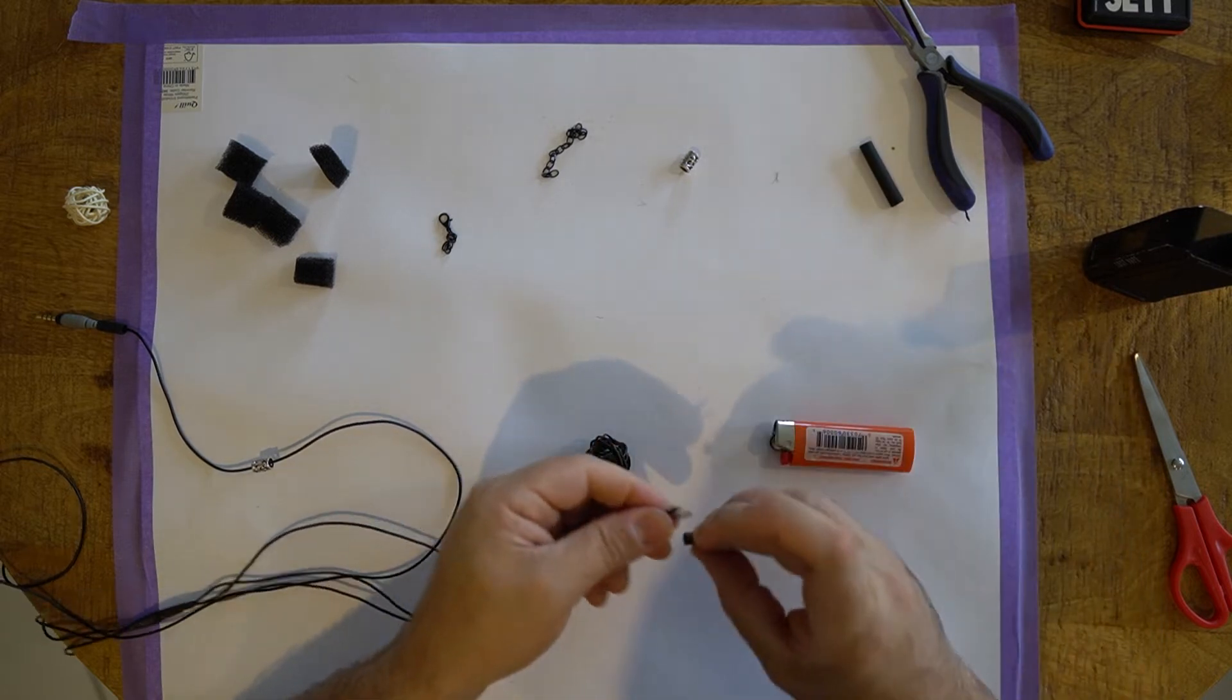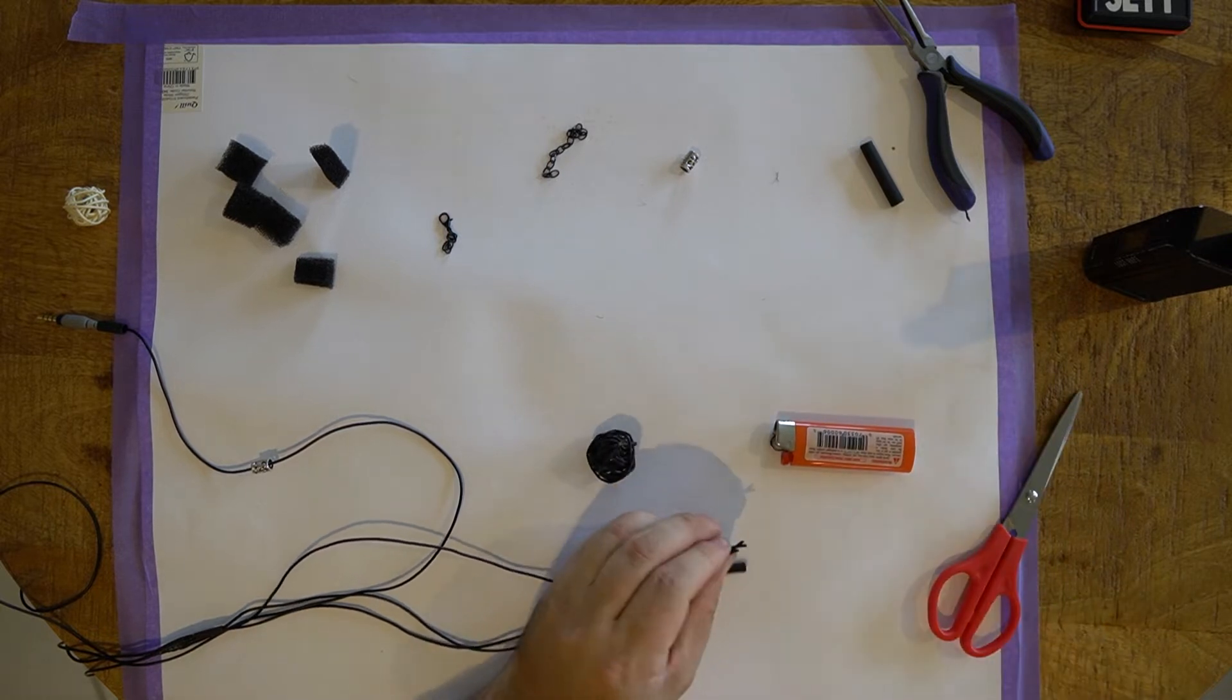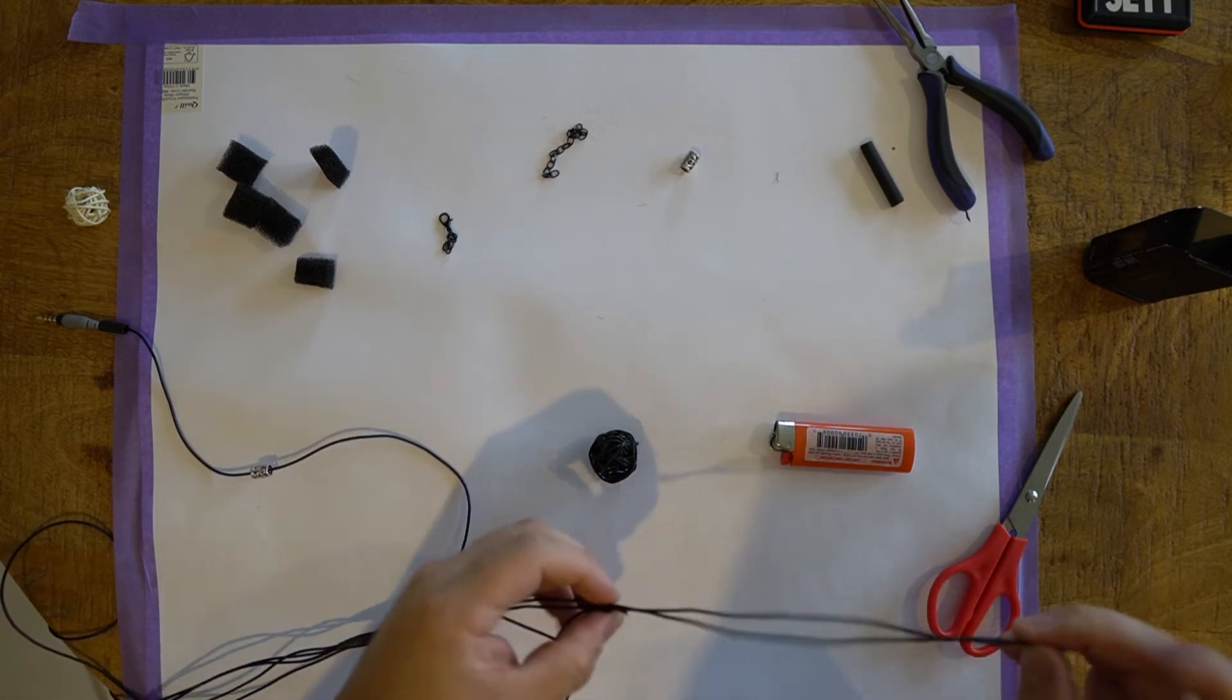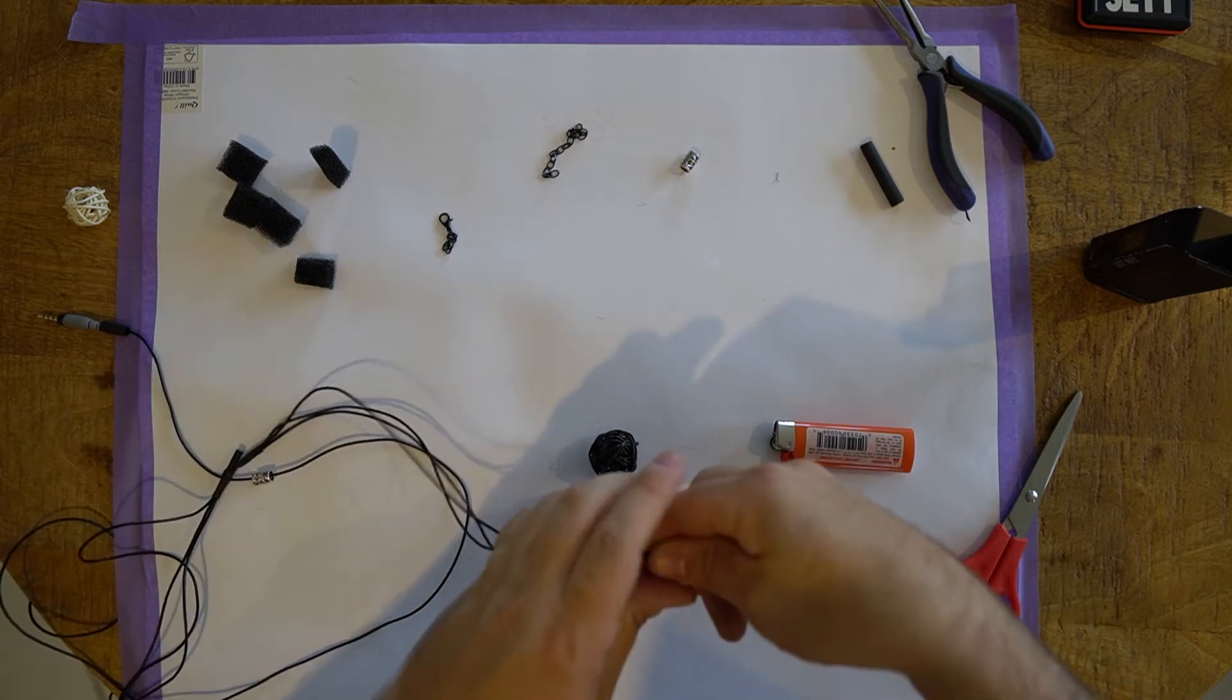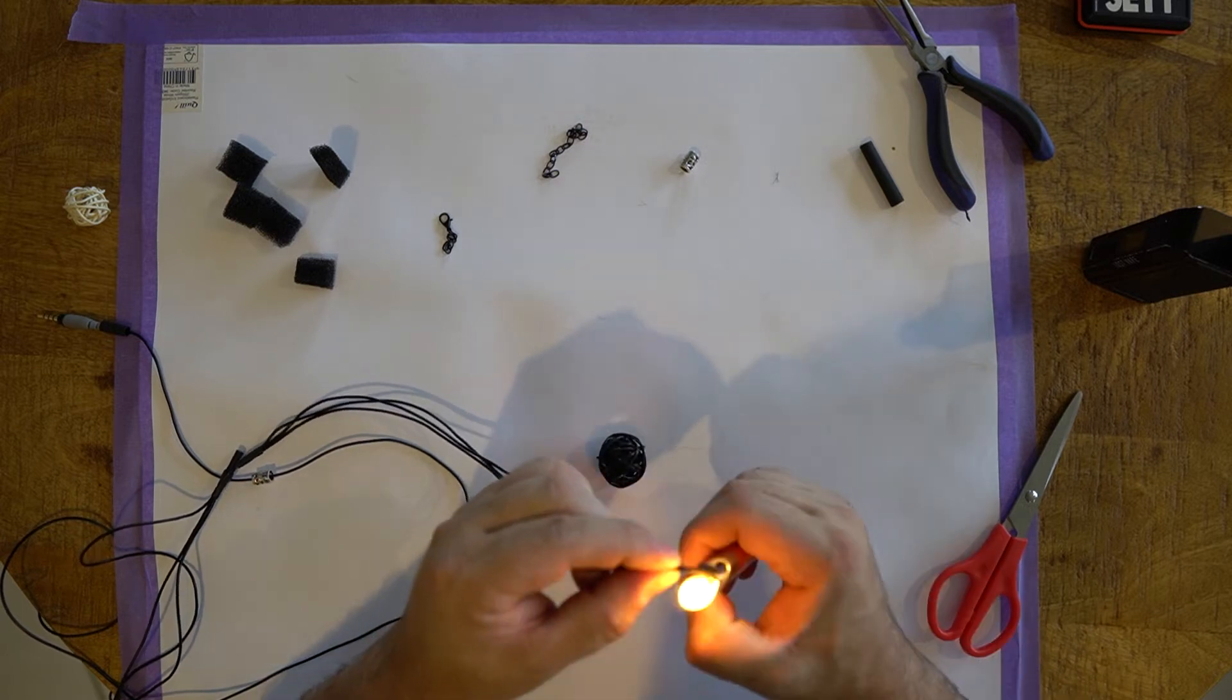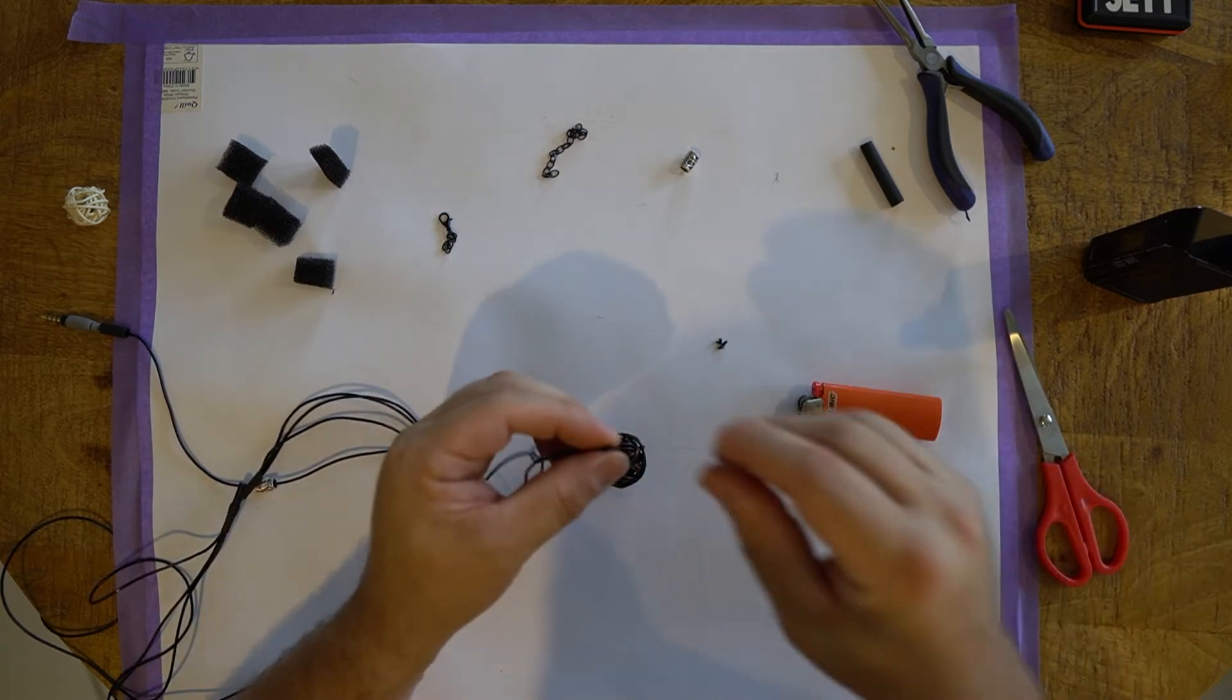So I'm just going to take a very little bit of this heat shrink and pop it over there. Pull it right down to the end and trim those tags up, because that's going to make it a lot easier to get through the center of this.